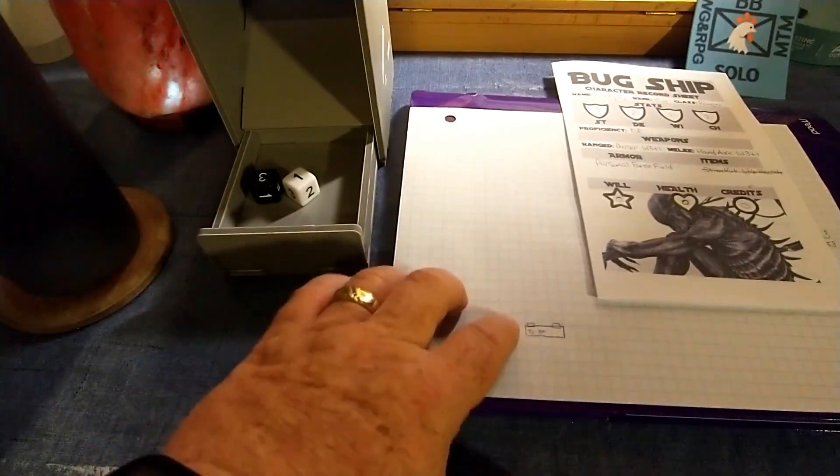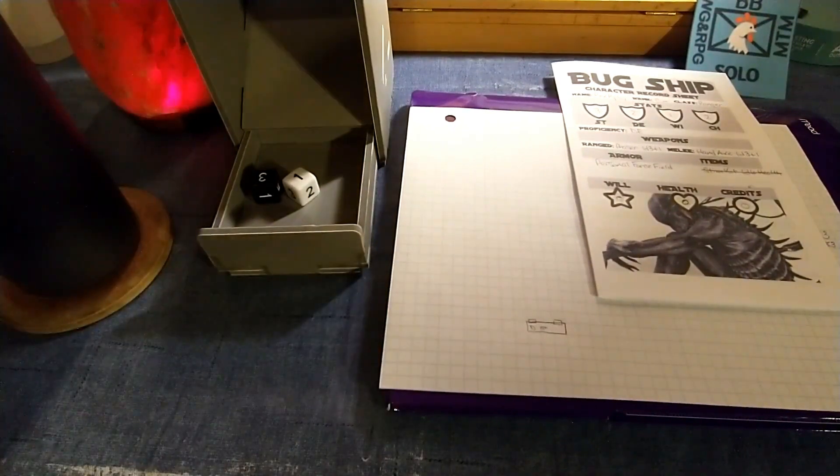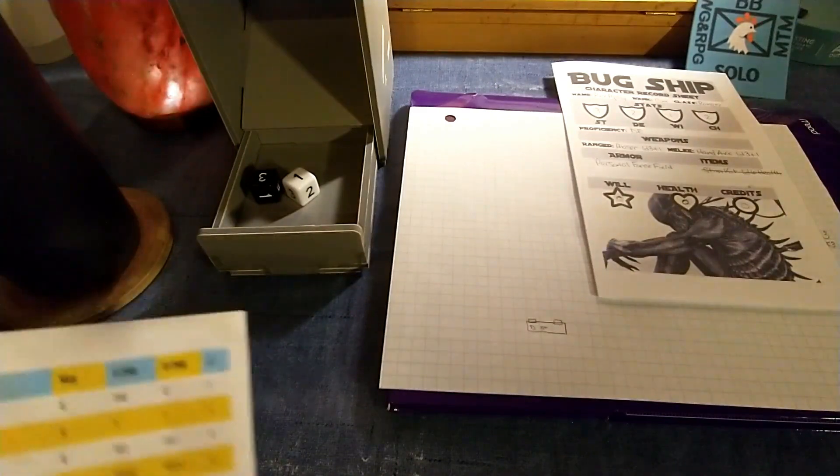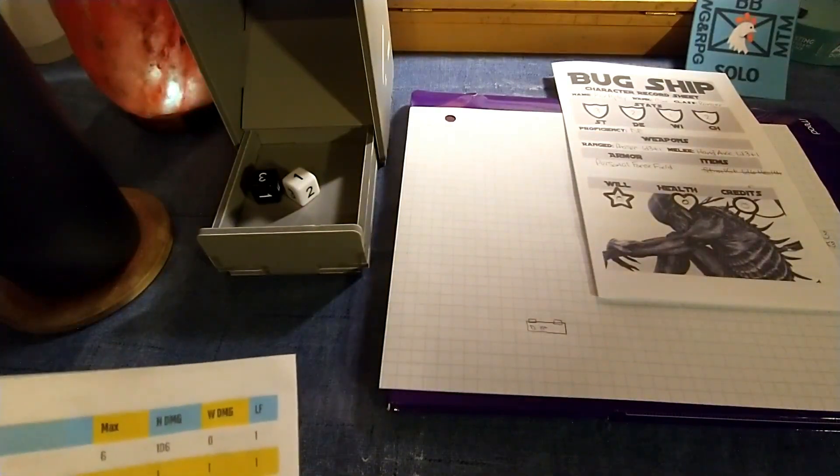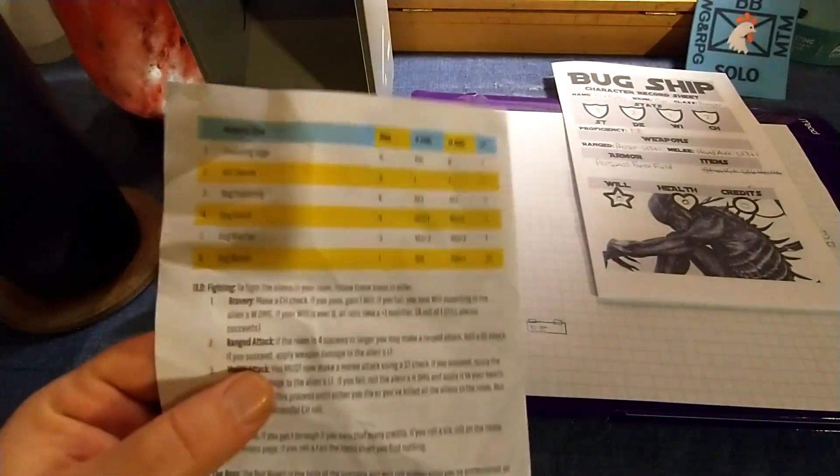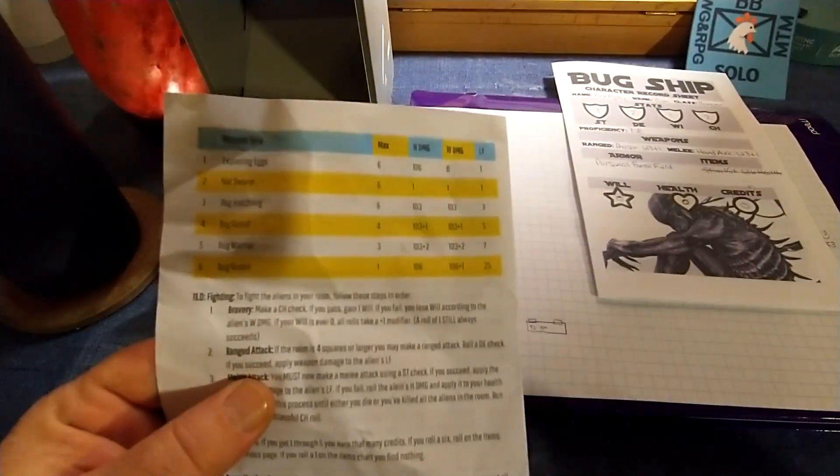And you would then roll for the next room size and continue on until you eventually meet all the monsters, or in this case aliens at least once. And then the Bug Queen, which would have been a very formidable opponent with a life force of 25 points.